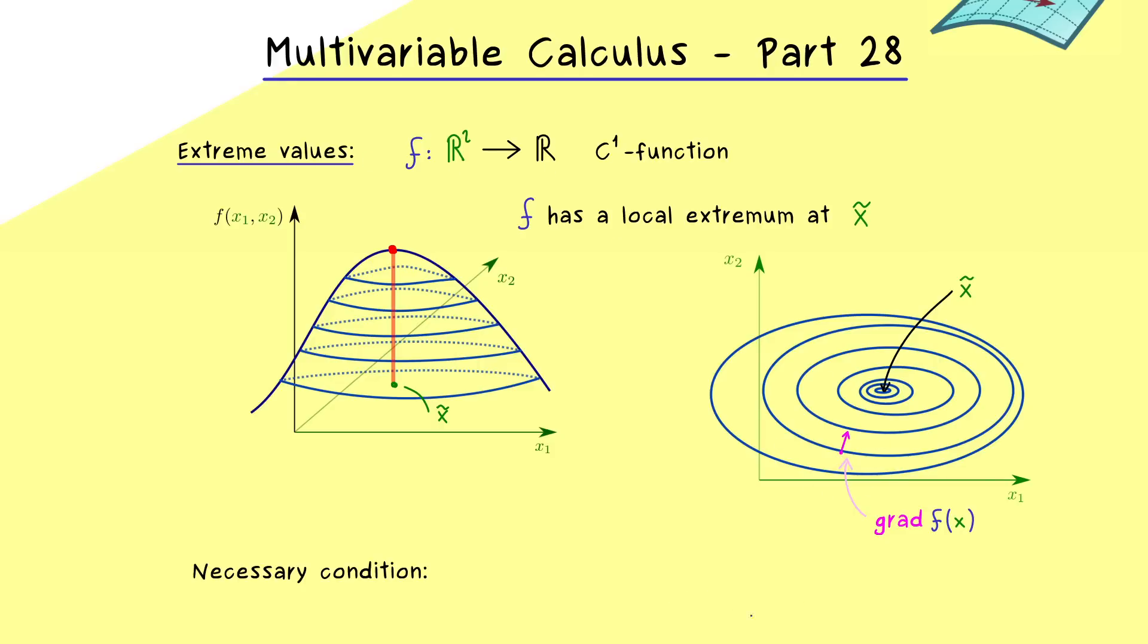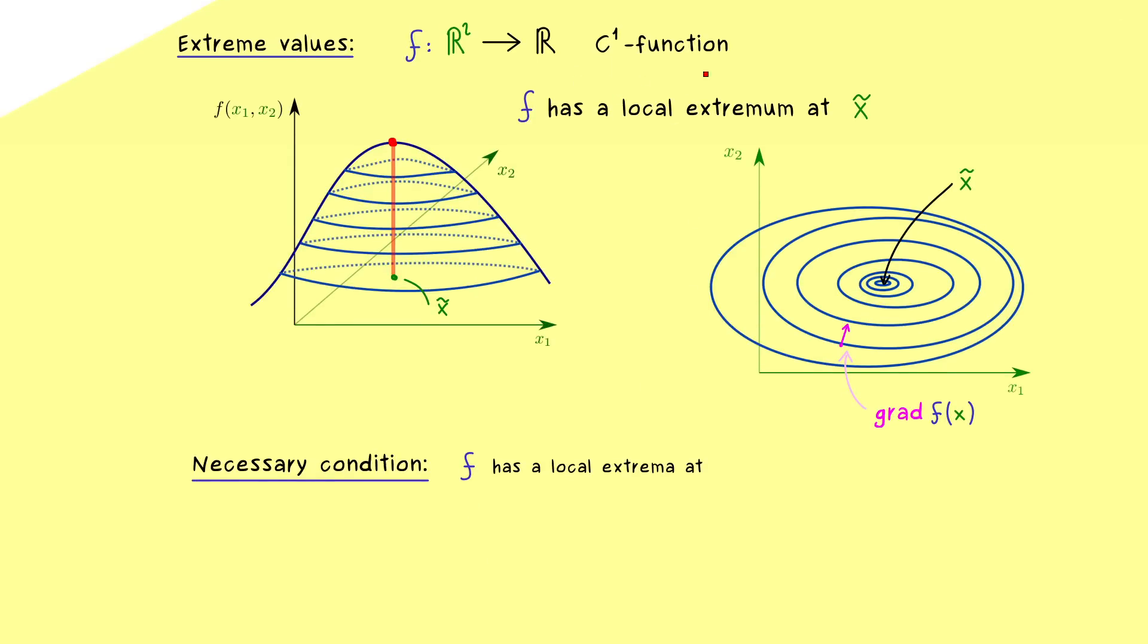And this immediately leads us to our necessary condition we have for the existence of local extrema. But please note, this one only holds for C¹ functions. And also, the domain we consider has to be an open set. But then under these conditions, we know that we can only find local extrema at points where the gradient of f is equal to 0. So it is necessary that the gradient vanishes. So in the two dimensional case, this means that we have (0, 0) for the gradient at x tilde.